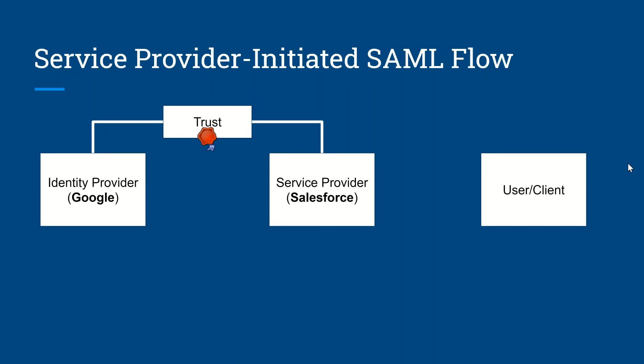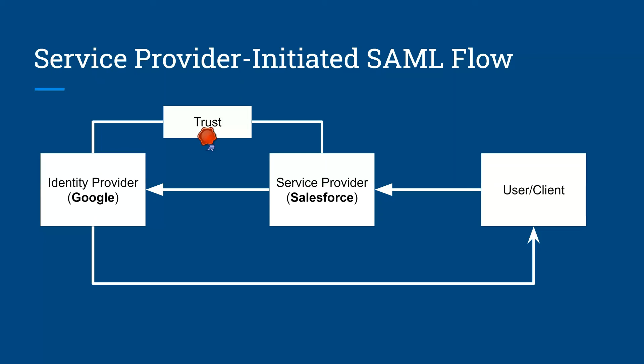The flow starts when a user wants to access the service provider. Once Salesforce receives this request, Salesforce sends a SAML request to the identity provider. Once the identity provider receives the SAML request, it authenticates the user by asking for the Google username and password. Once that is done, it sends a SAML response — but not directly to the service provider. It passes through the user's browser, so the user's browser is responsible for sending the SAML response back to the service provider.